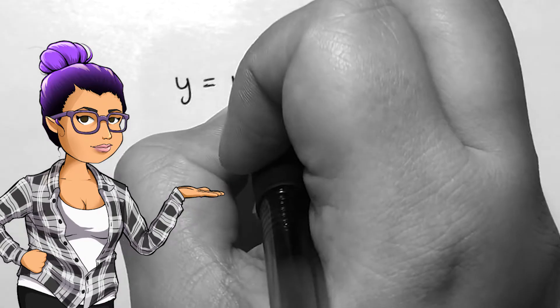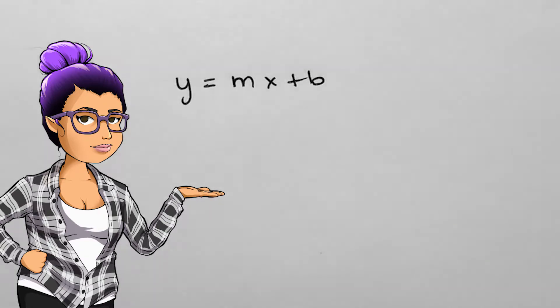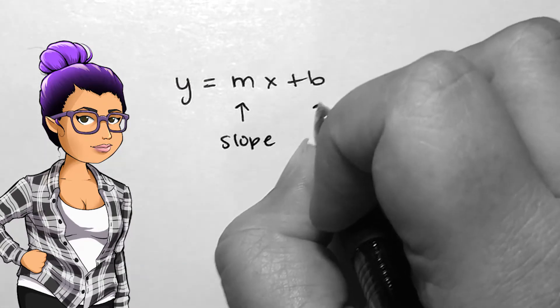A linear function has algebraic representation y equals mx plus b, where m is the slope and b is the y-intercept.